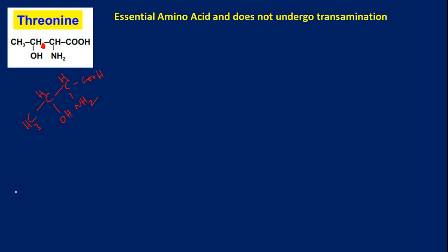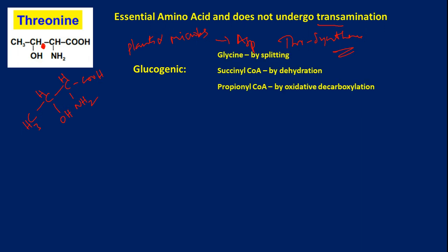Threonine does not undergo transamination reaction. It is biosynthesized in plants and microbes from aspartic acid via threonine synthase enzyme. It is a glucogenic amino acid — it is degraded to glycine, which participates in gluconeogenesis. It will also be converted to succinyl coenzyme A, which enters gluconeogenesis, and it gives propionyl coenzyme A by oxidative decarboxylation. It is also ketogenic because propionyl coenzyme A can be degraded to give acetyl coenzyme A, which gives acetoacetyl coenzyme A — an important ingredient in ketone bodies.